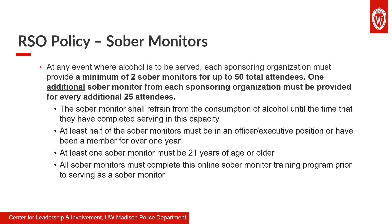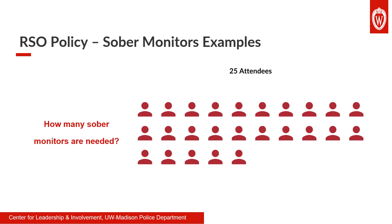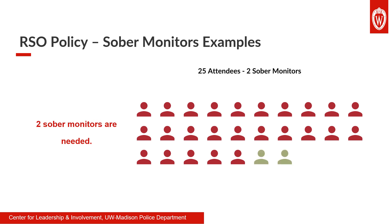We'll now take a moment to look at a few examples of how to calculate the number of sober monitors that you'll need for an event. Once you're given the information for your event, take a moment to think about the number of total sober monitors needed. For example, here we have an event for a single organization that has 25 individuals in attendance. How many sober monitors would be necessary? Take a moment to pause this video before revealing the answer. For 25 attendees, you would need two sober monitors.